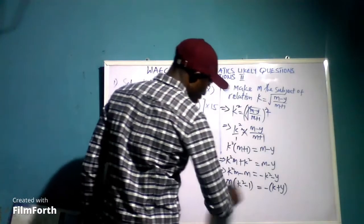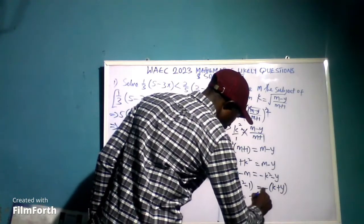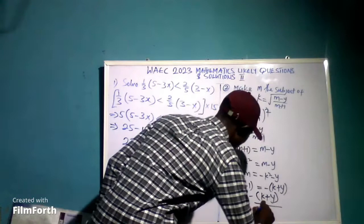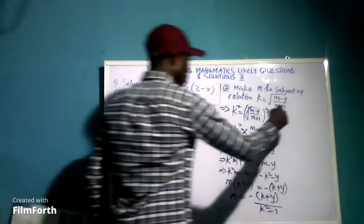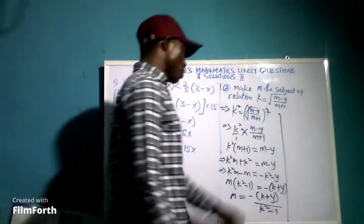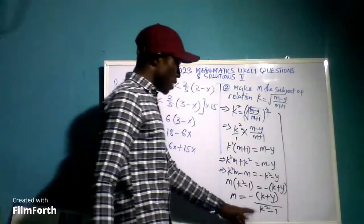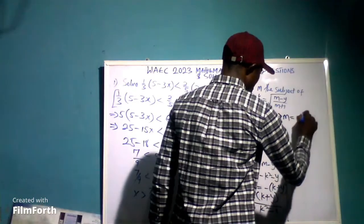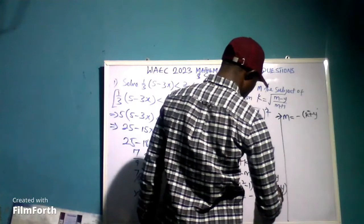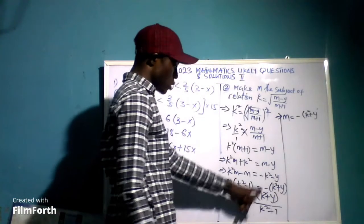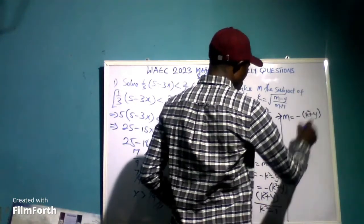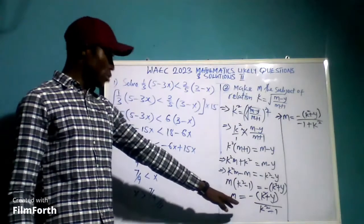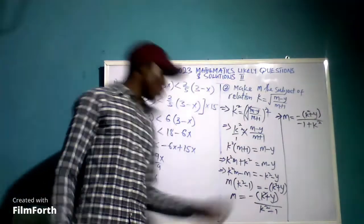Bringing m to one side: k squared m minus m equals negative k squared minus y. We factor out m so that we have m open bracket k squared minus 1 close bracket equals negative open bracket k squared plus y close bracket. We can factor out a negative sign so that we have negative open bracket k plus y close bracket all over k squared minus 1.